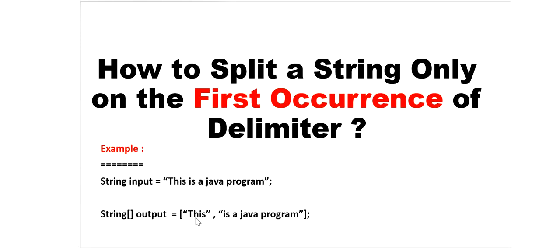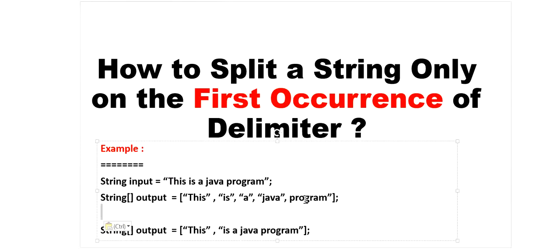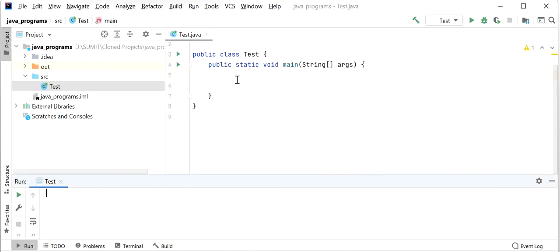There will be two strings: the zero index and the first index of the array. But if we directly apply the input dot split method and pass space as a delimiter, it will break the string into five parts like 'this', 'is', 'a', 'java', 'program'. That is not our requirement — we want to split only based on the first occurrence of the space delimiter.